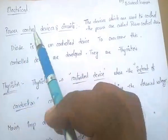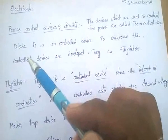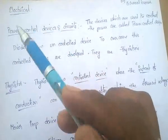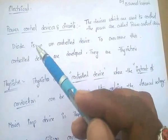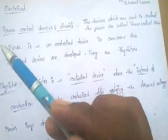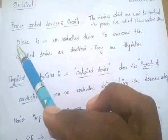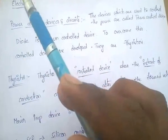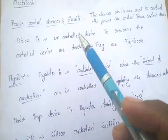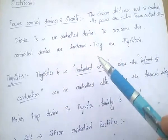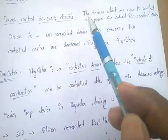The diode, or power diode, is an uncontrolled device — we cannot control the output by using diodes. To overcome this limitation, controlled devices were developed. These controlled devices are nothing but thyristors.